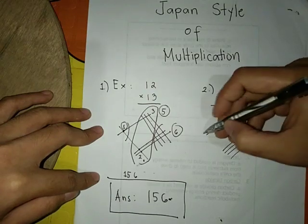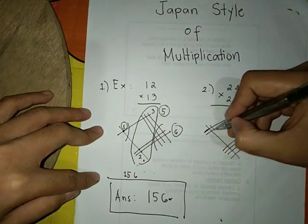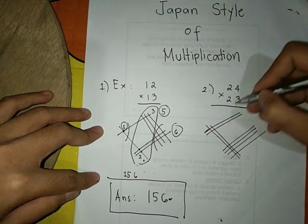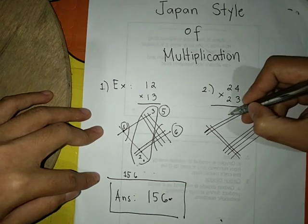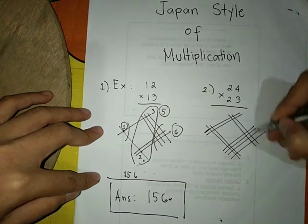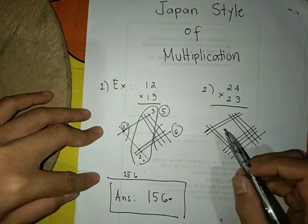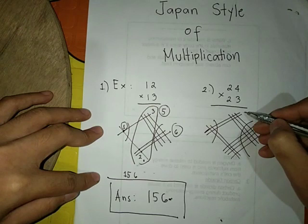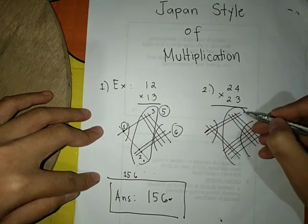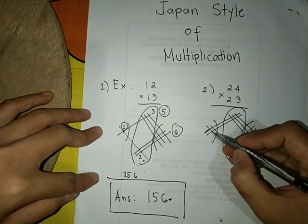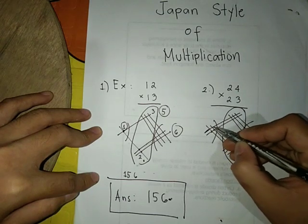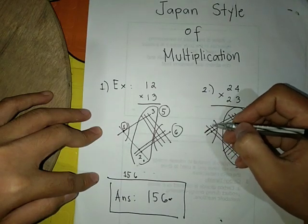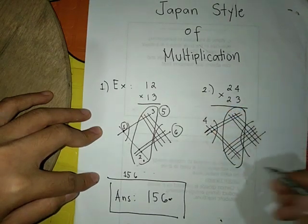Here two lines, here three lines: one, two, three. Count the intersection of the lines. There are four intersections here.